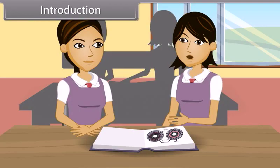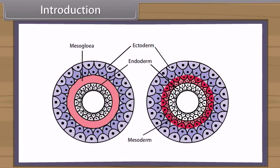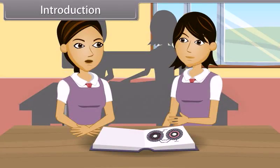According to presence and number of germ layers, animals are either diploblastic, e.g. sponges and coelenterates, or triploblastic, e.g. flatworms to mammals. We will now discuss some important characters and examples of various phyla of Kingdom Animalia.